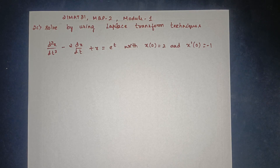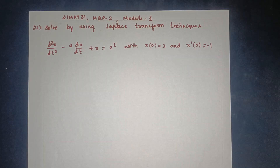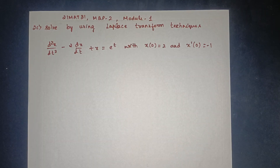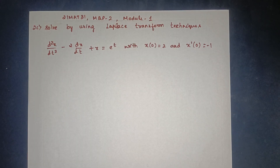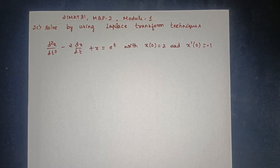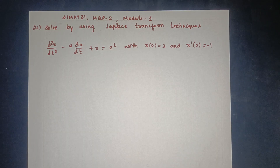Not only question 21, but even model question 2, model 1 and series 2 are created. Solve by using Laplace transform technique. d²x/dt² minus 2 dx/dt plus x is equal to e^(4t), with x(0) equal to 1 and x'(0) equal to minus 1.